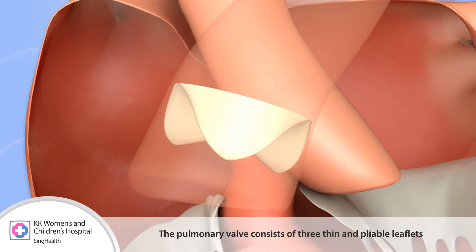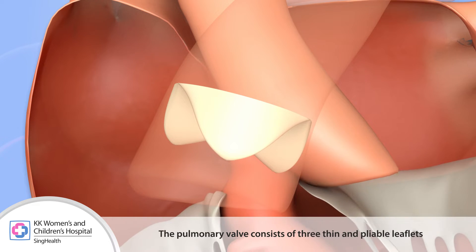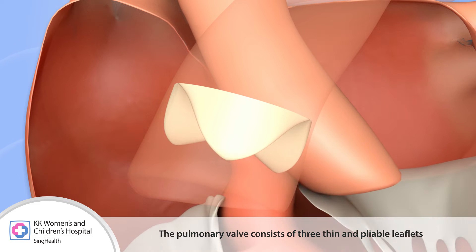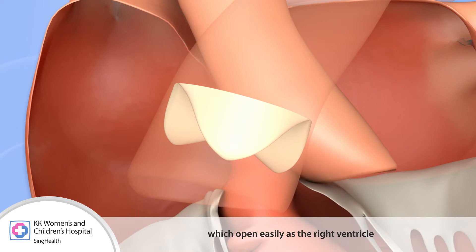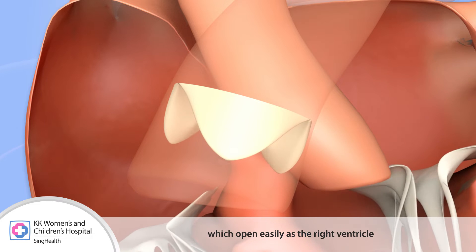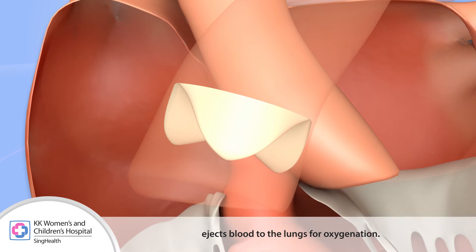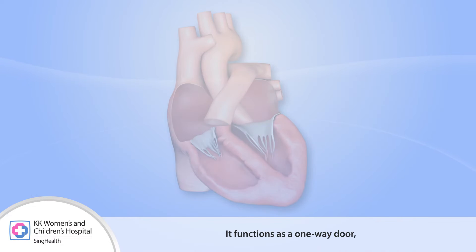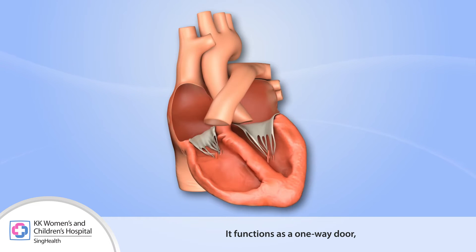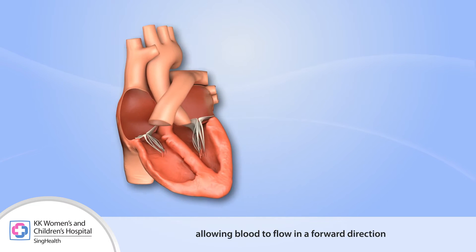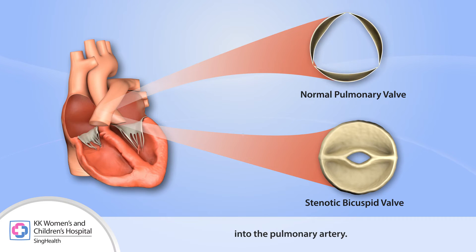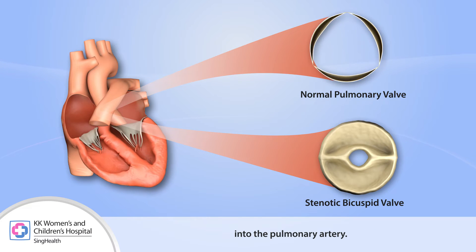The pulmonary valve consists of three thin and pliable leaflets which open easily as the right ventricle ejects blood to the lungs for oxygenation. It functions as a one-way door allowing blood to flow in a forward direction into the pulmonary artery.